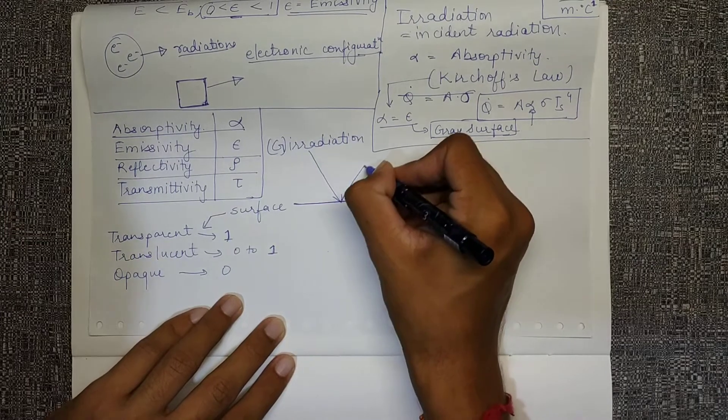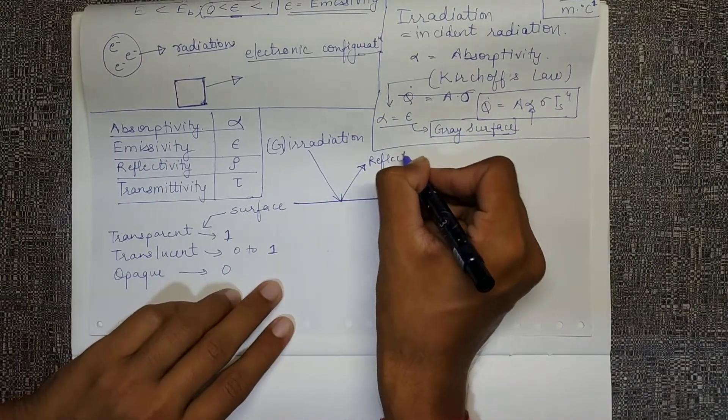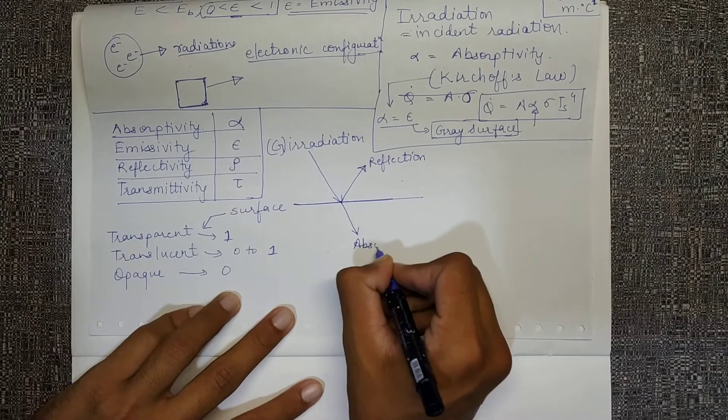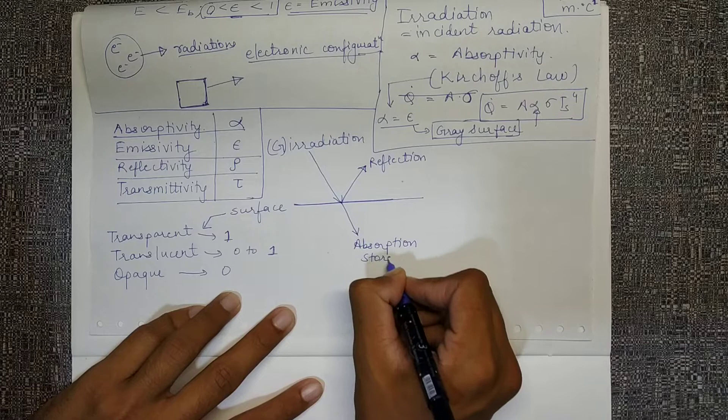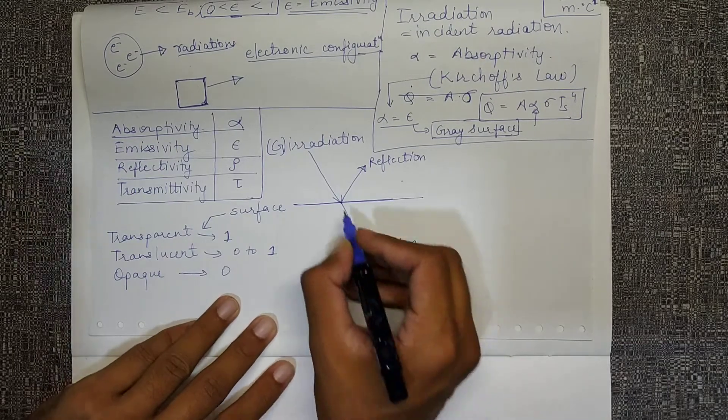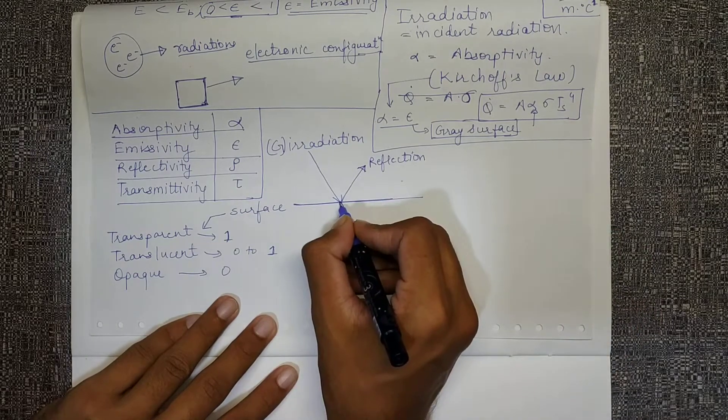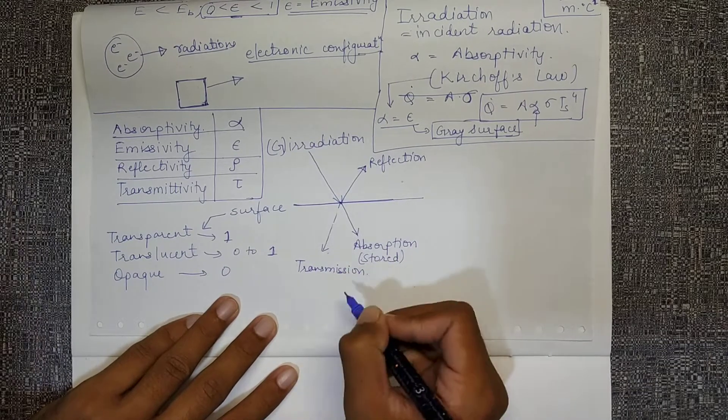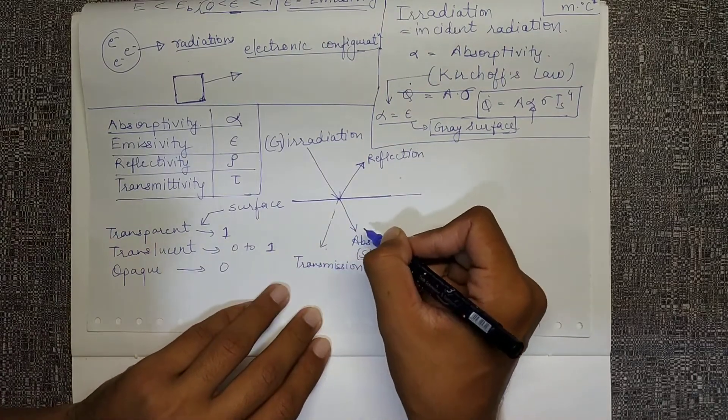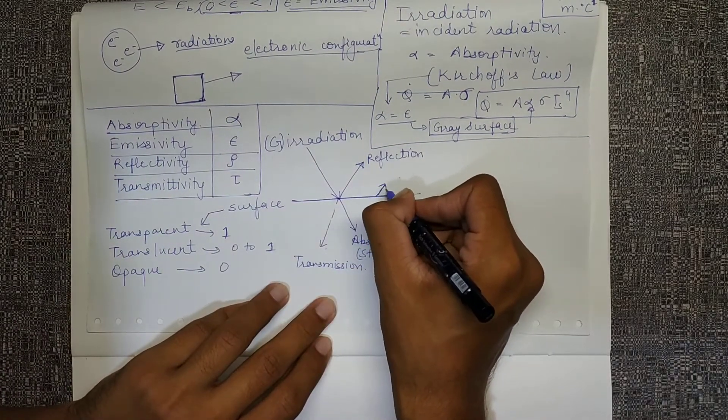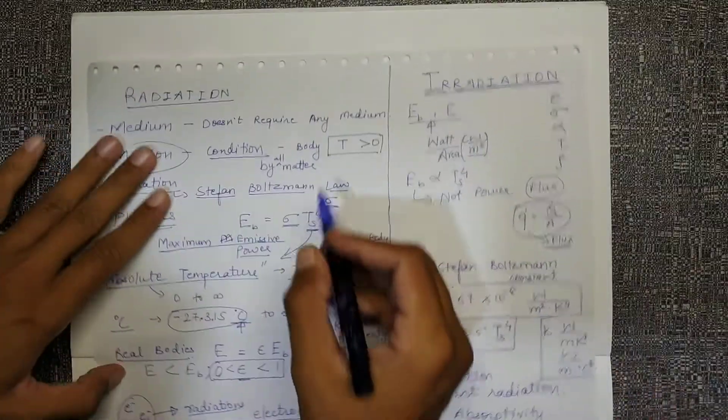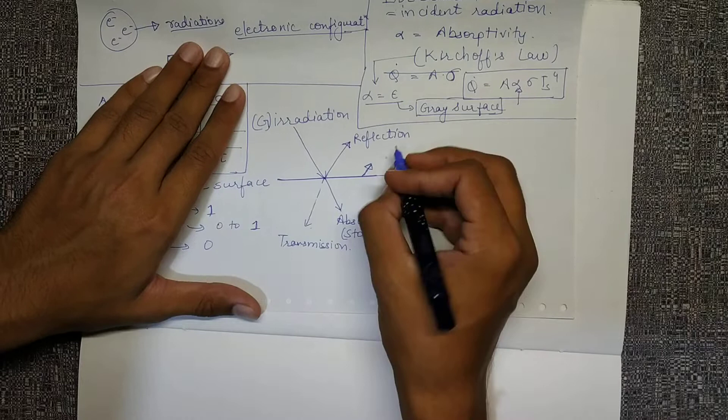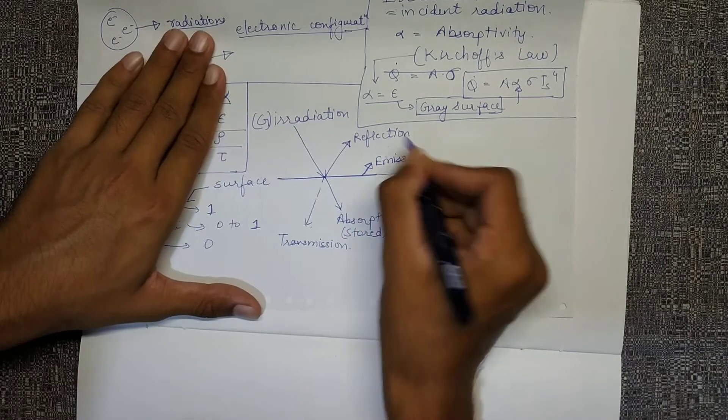As per the properties of transparent, translucent and opaque, the values of these coefficients will change. But for sure what will happen is: whatever is coming, some will be reflected back, some will be absorbed or stored, and some will be transmitted to some other body. After storing, there will be some part of emission since the temperature has increased.